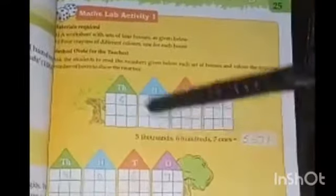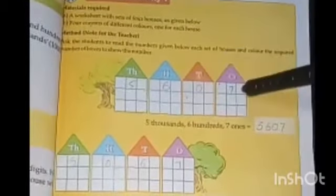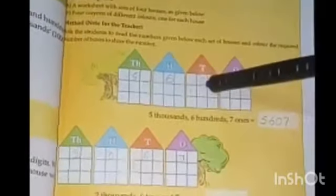Using the same method, we will solve the exercise from page number 25. Five thousand, six hundred, seven ones. So we will put 5 into the thousands house, 6 into the hundreds house, and 7 into the ones house. There will be zero tens, so we will put zero here.